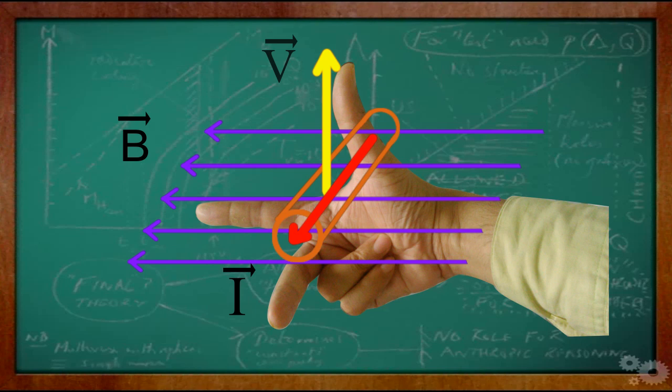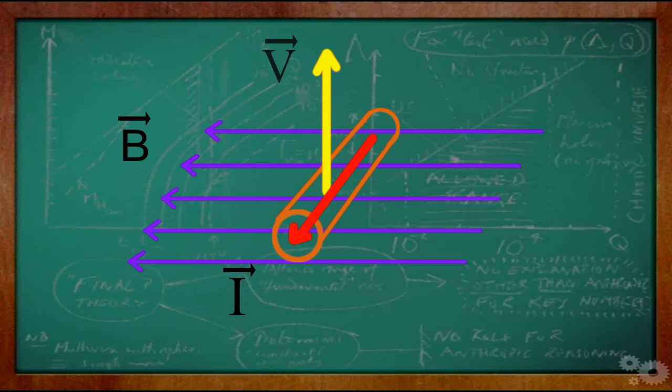This rule is widely used to find out the direction of current induced in windings of a generator.